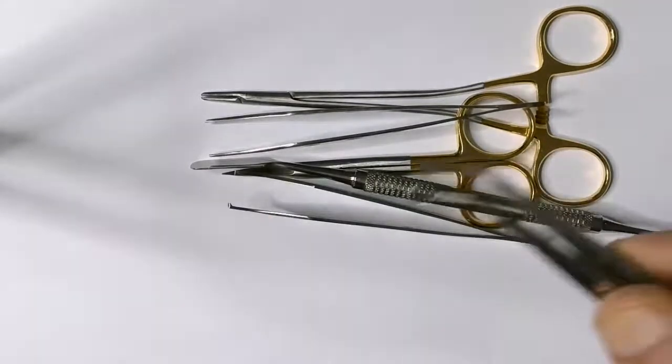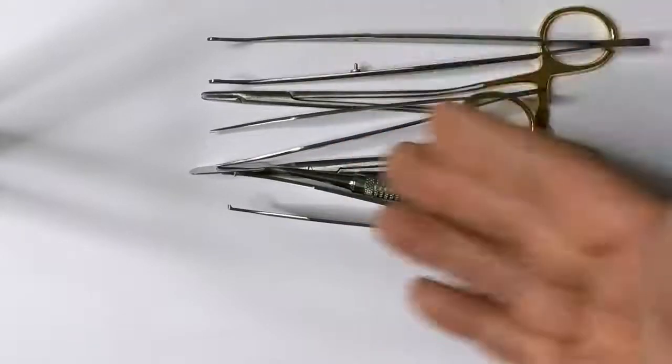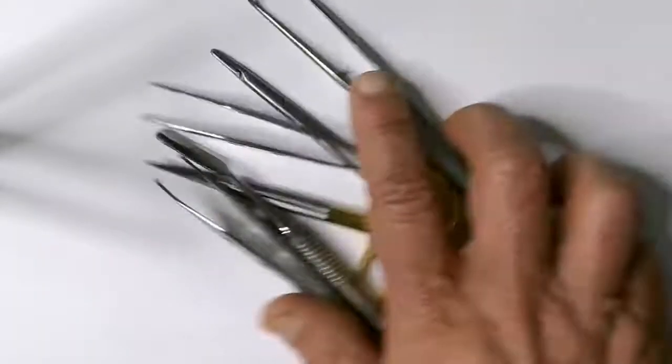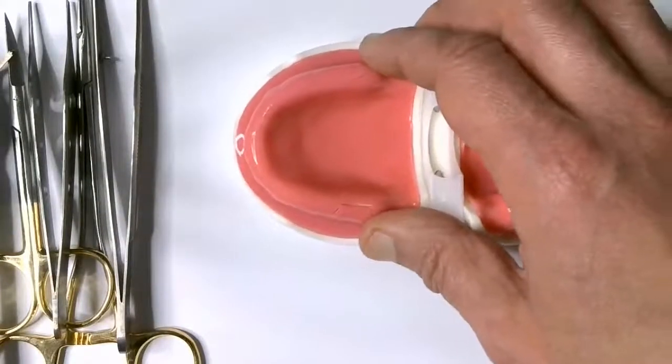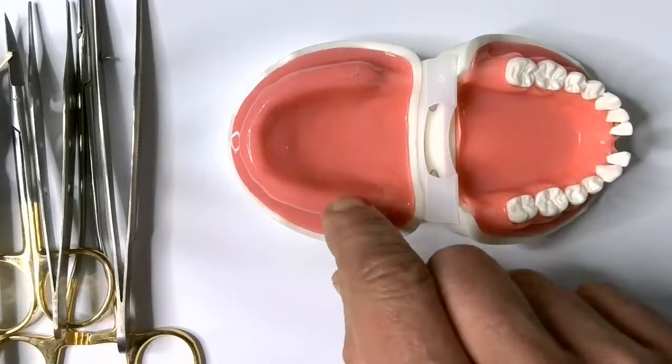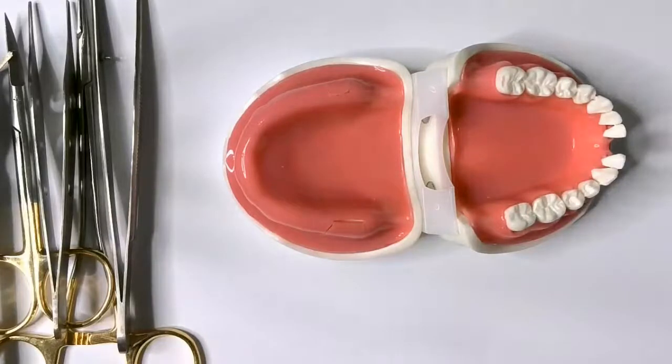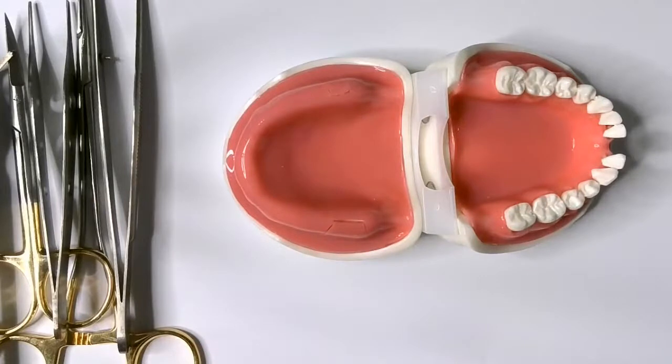Okay, so these are the instruments that are essential for starting suturing. Now we'll get these out of the way and get the suture model and have a look at what we can do here. Now I've cut a flap here, just a little one, just to explain or demonstrate how suturing is done easily.